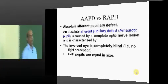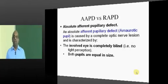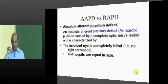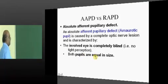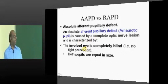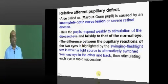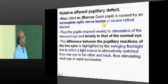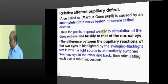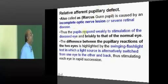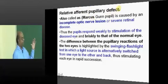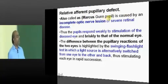In conditions like optic neuritis, the conduction of light sense is diminished in the optic nerve but not totally gone — these are called relative afferent pupillary defects. In absolute afferent pupillary defect, the involved eye is completely blind; pupils are equal in size and it is called an amaurotic pupil. The relative type is called the Marcus Gunn pupil.